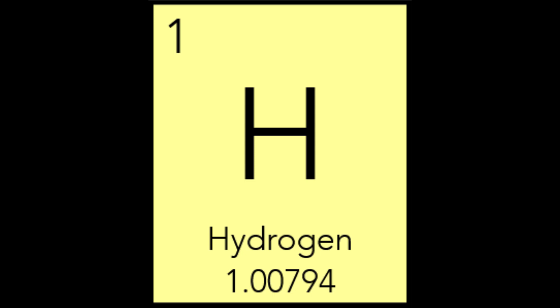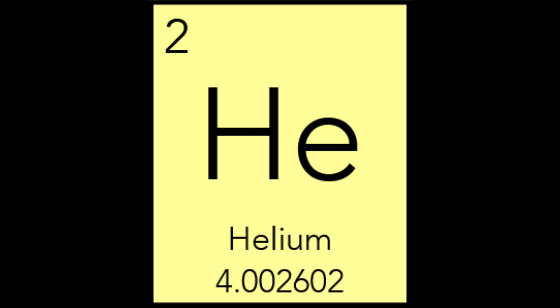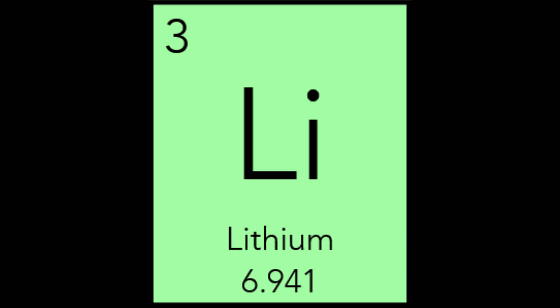Helium has the symbol He and comes from the name of the Titan Helios from Greek mythology. This is because it was detected as a yellow spectral line signature in sunlight during a solar eclipse. Helium is the second most abundant element, making up roughly 24% of the universe, while hydrogen makes up 75% of all matter. Lithium, with the symbol Li, is the lightest metallic element, and its name comes from the Greek lithos, which means stone, because it was discovered from a mineral. Lithos is the root word for paleolithic and lithosphere.